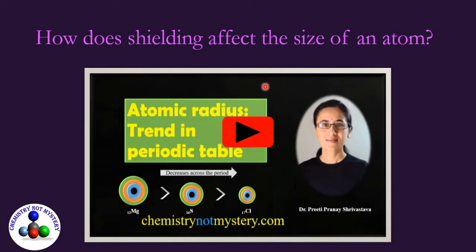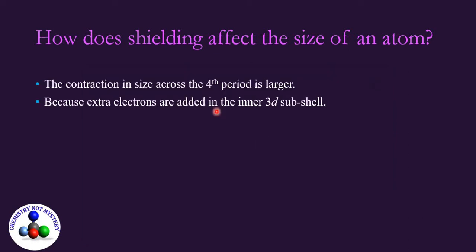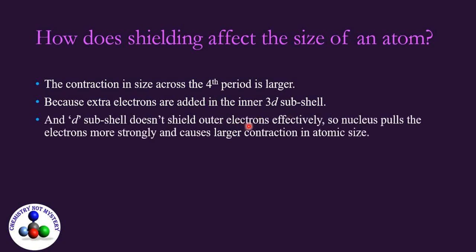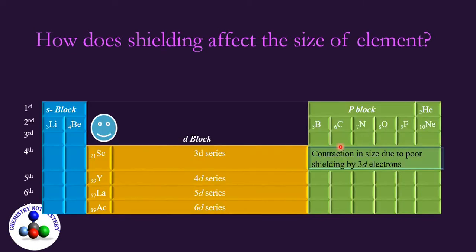If you want to learn more about the trend in atomic size, you can watch my previous video of atomic radii trend in periodic table. I have given its link in the description box. Because extra electrons are added in the 3d subshell, the d orbitals do not shield outer electrons more effectively. So nucleus pulls the electrons more strongly and causes larger contraction in the atomic size. After filling all the 10 electrons in 3d subshell, electrons of 4p experience the strong pull of nucleus because of the poor shielding of 3d orbitals.